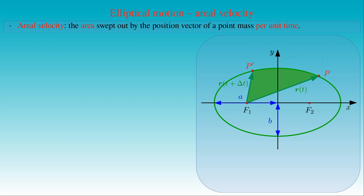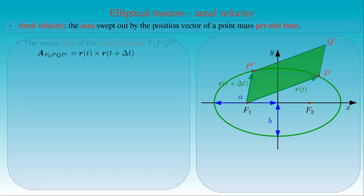The two vectors define the parallelogram F2, P, Q, P', and we can compute its vector area by taking the vector product of the two vectors. That is, the vector area A of the parallelogram is equal to the cross product of R(t) times R(t + delta t). The direction of the vector area is simply perpendicular to the plane of the ellipse in which the two vectors lie.